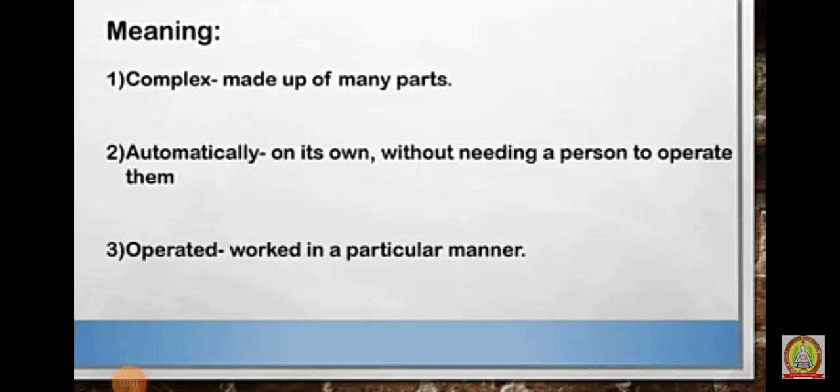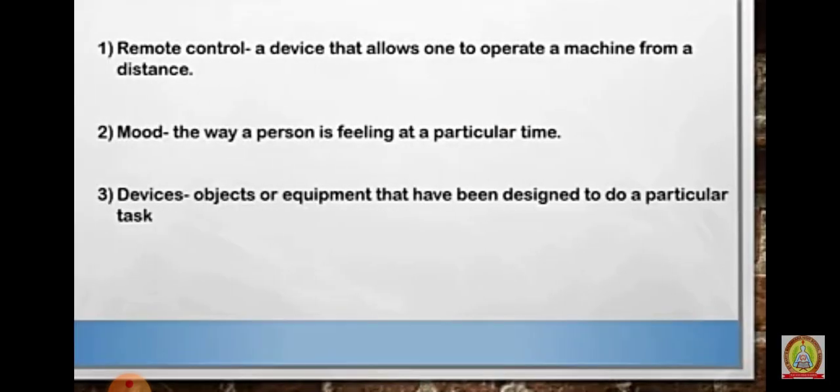Today my video on robotics question answer. Complex: made of many parts. Automatic: automatically on its own without needing a person to operate them. Operate: work in a particular manner. Remote control: a device that allows one to operate a machine from a distance.